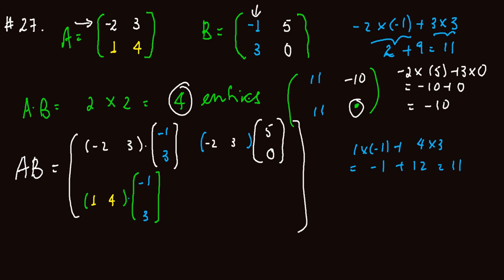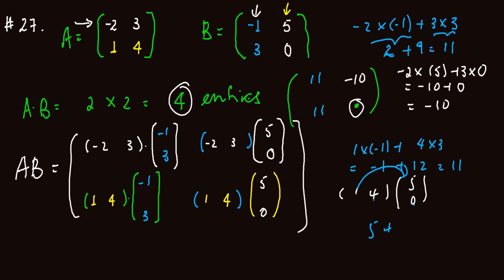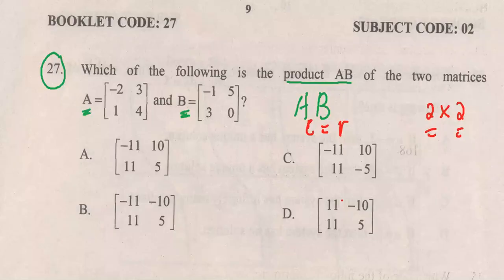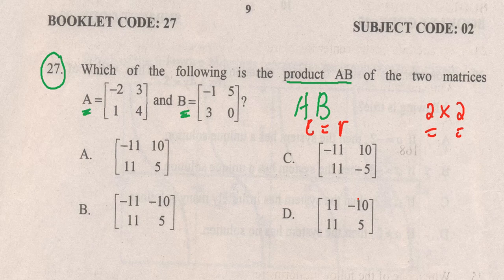Finally, the second row of the first matrix multiplied by the second column of the second matrix: the dot product of 1, 4 with 5, 0 is 1 times 5 plus 4 times 0, which equals 5. Therefore, our matrix AB has first row 11, minus 10 and second row 11, 5. So our answer is choice D.